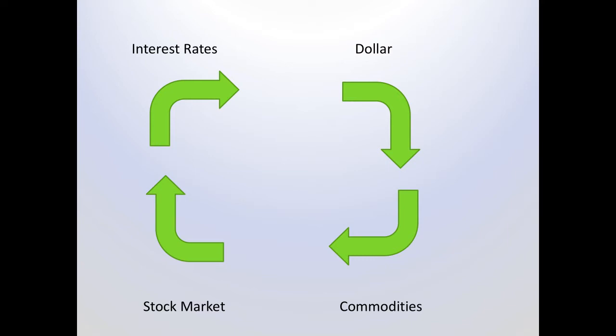The stock market then affects everything else because the stock market is a leading indicator of the economy. So if the economy is strong — i.e. the stock market is strong — then that means interest rates go up, the dollar goes up, commodities go down. It's this constant interaction.